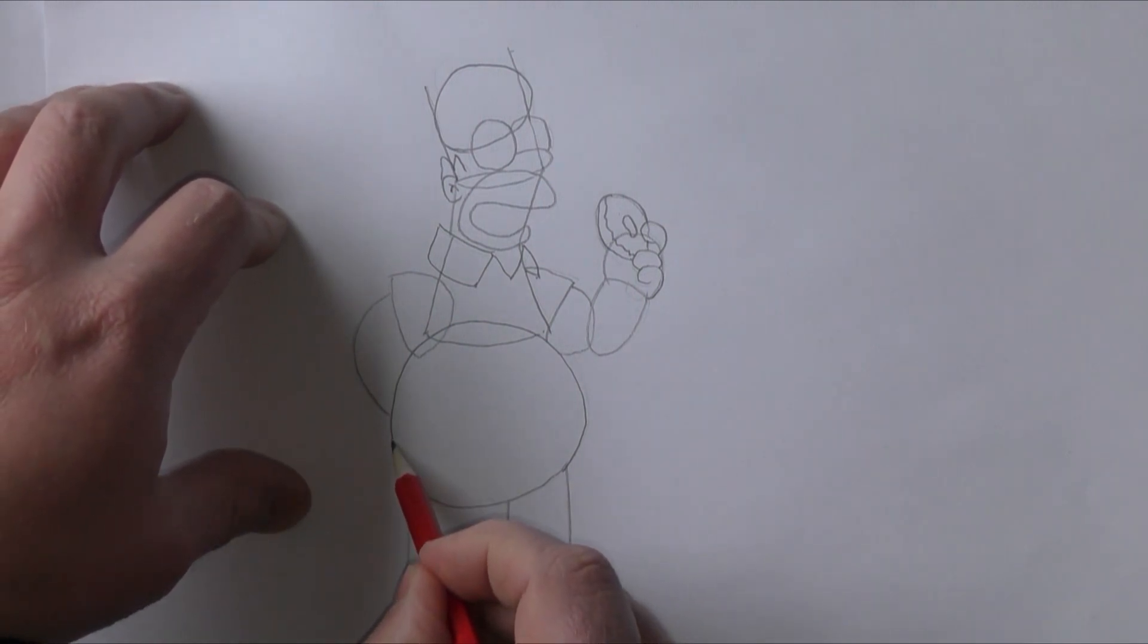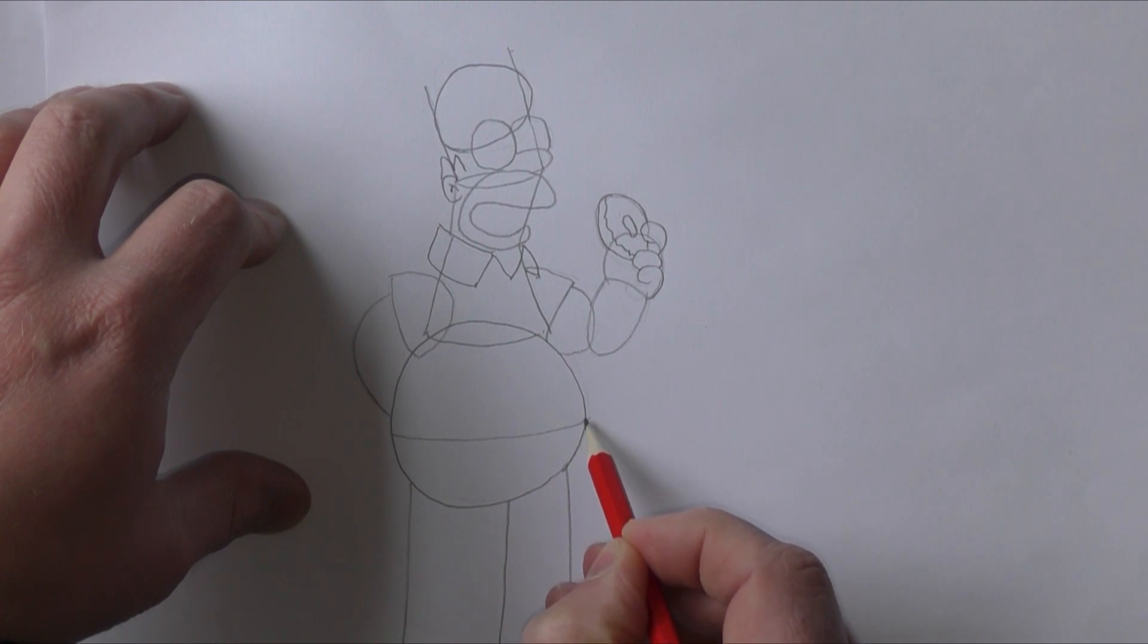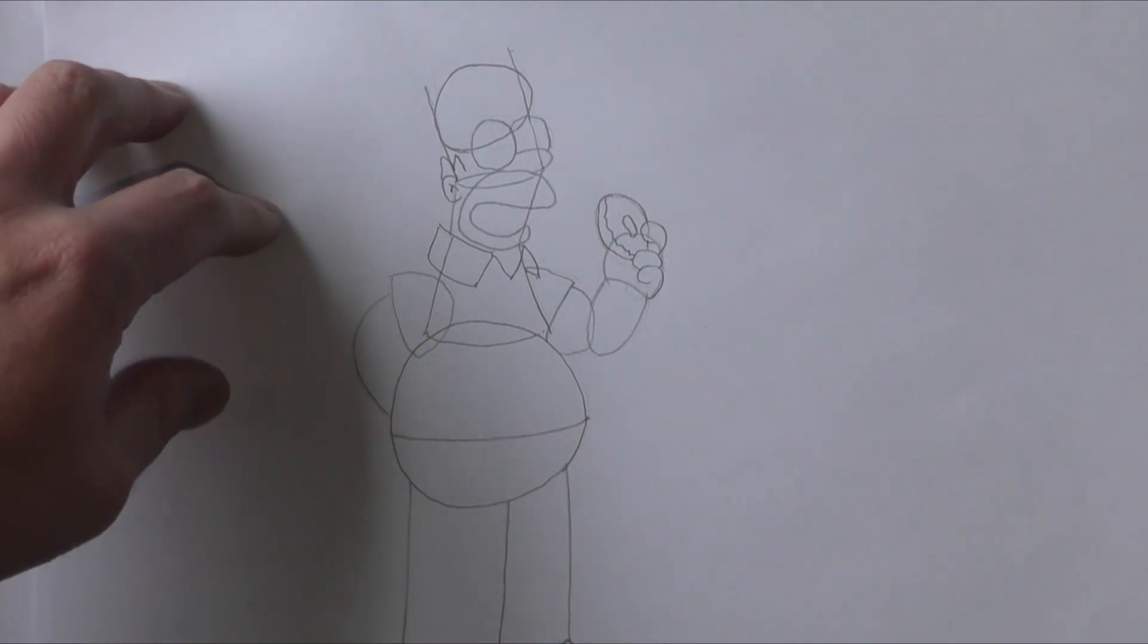Okay, now we can start to draw a quick line here just for the bottom of his shirt. There we go, just so we know his shirt finishes and his trousers will start. That's it, perfect.